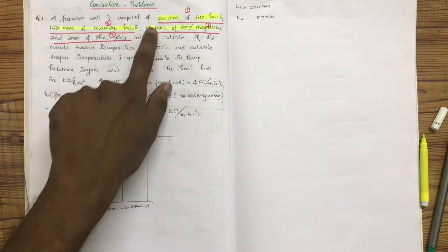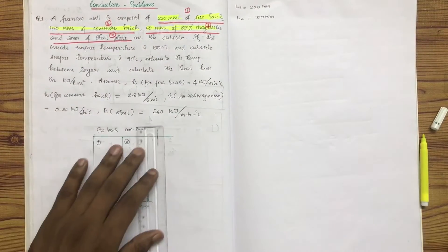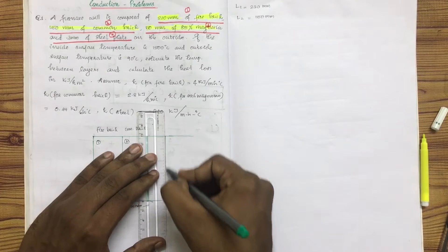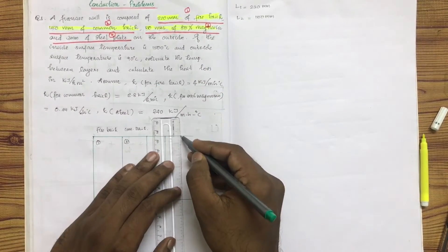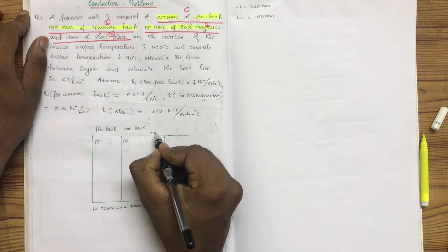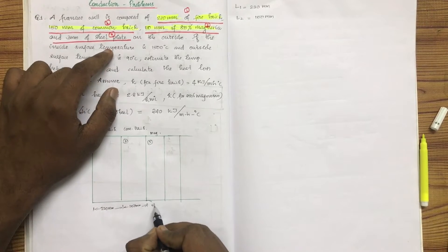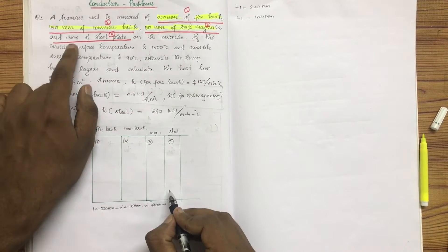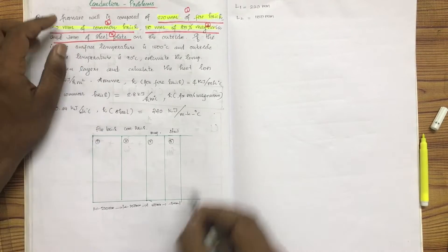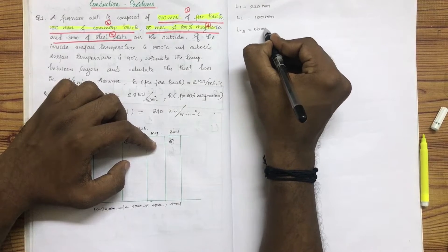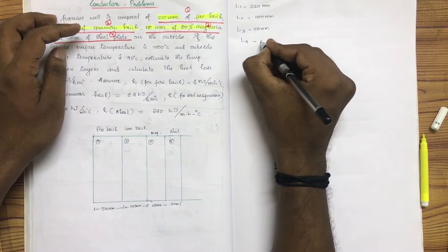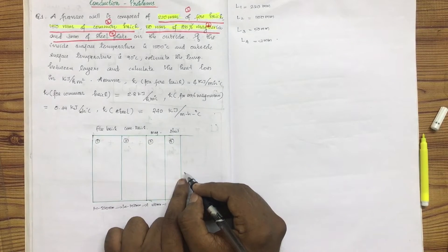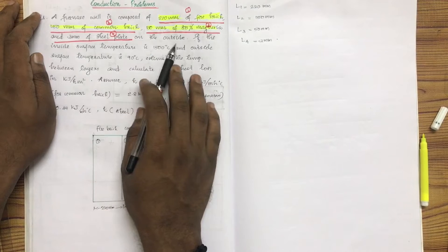50mm of 85% magnesium. The magnesium layer is 50mm. It is 15mm... actually the steel plate is 3mm. L3 is 50mm and L4 is 3mm. The steel plate is on the outside, the inner side faces the heat.